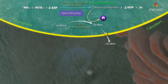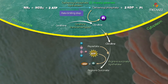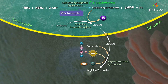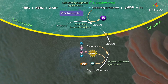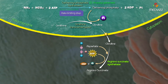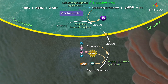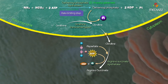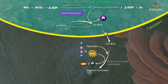Aspartate condenses with citrulline to form argininosuccinate; this reaction is catalyzed by the cytosolic enzyme argininosuccinate synthetase. The amino group on the aspartate provides the second amine found in the urea, and this step requires the cleavage of ATP to AMP with release of pyrophosphate.